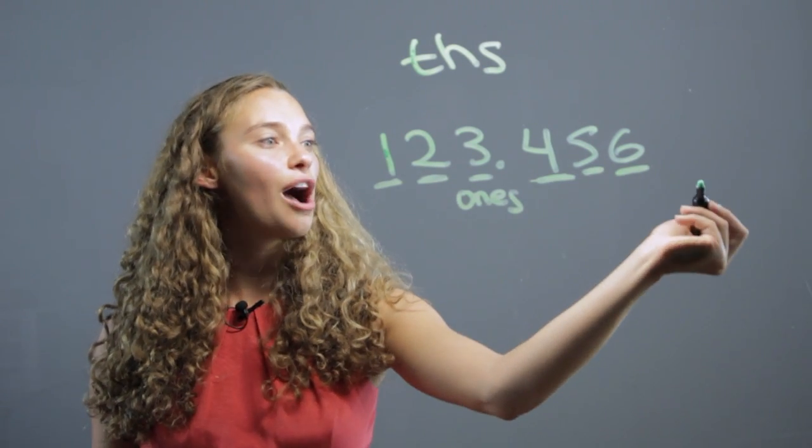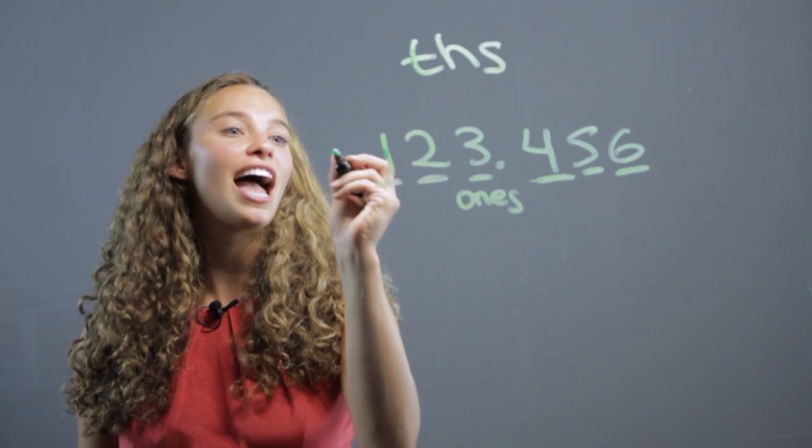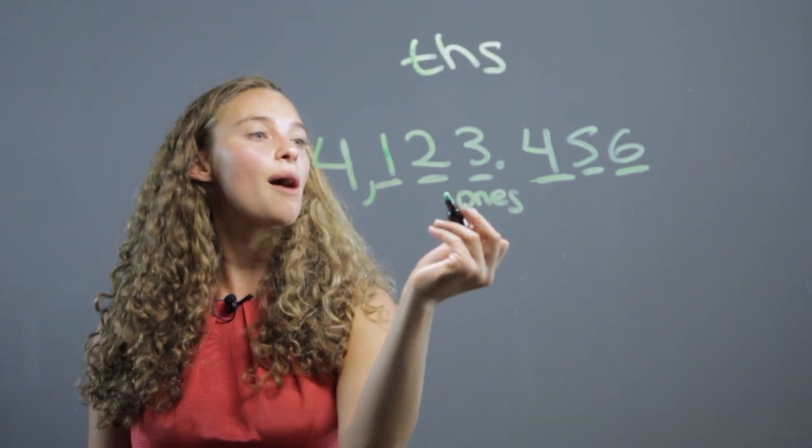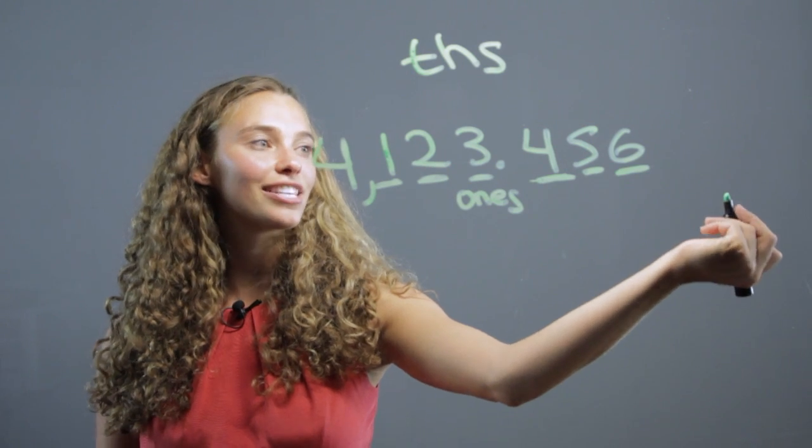And again, of course, there's no commas, whereas here, if you were to add a four in front, you would have to put a comma, whereas you don't have to put commas after the decimal.